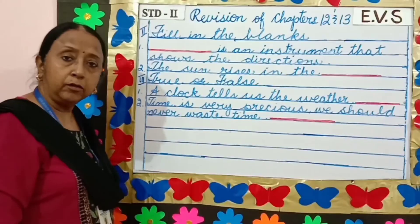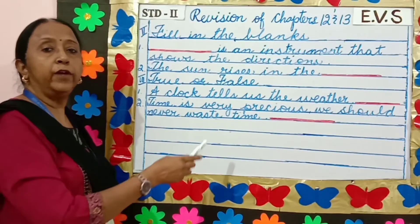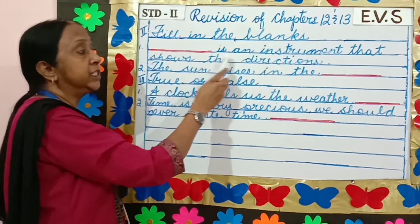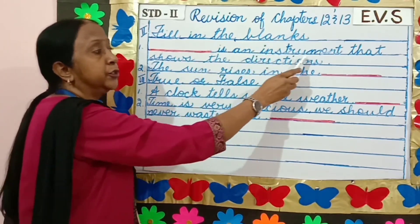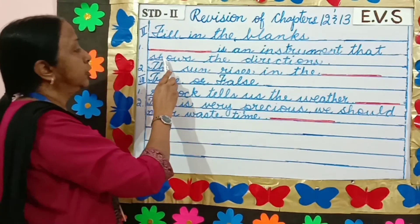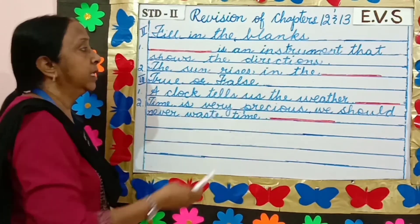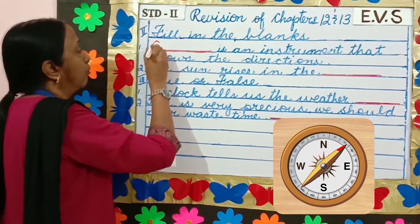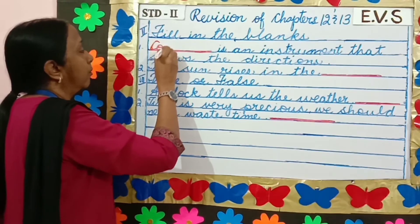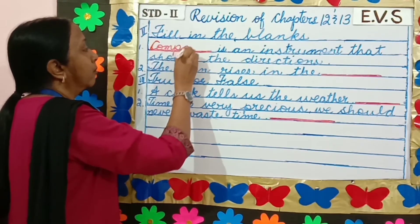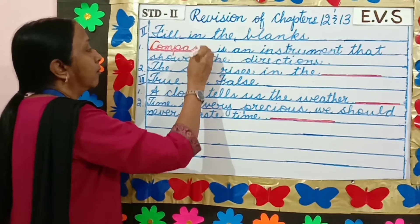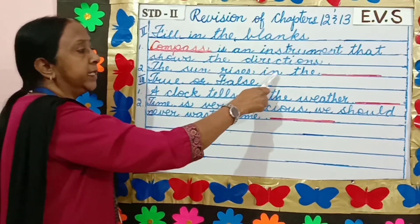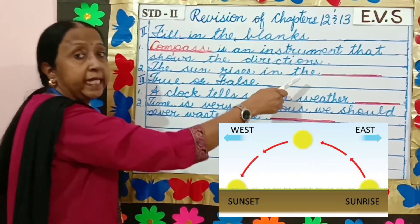Now children, we will do fill in the blanks. Blank is an instrument that shows the directions. Compass. The sun rises in the east.